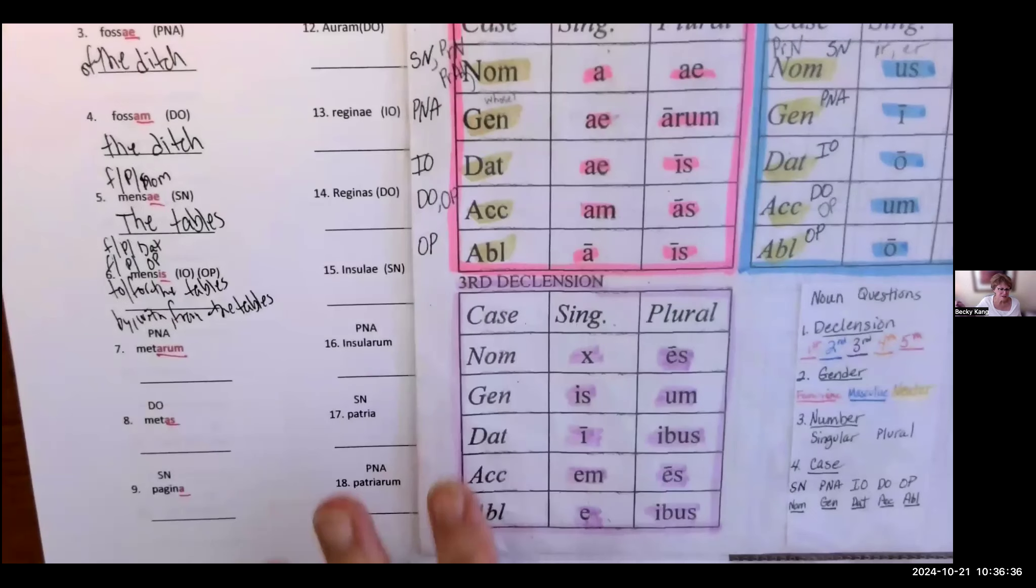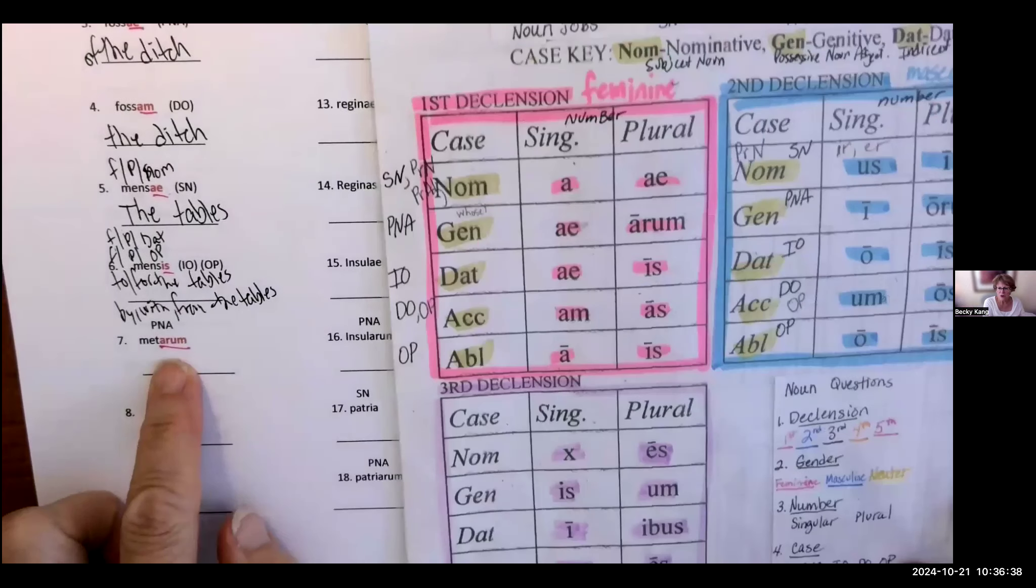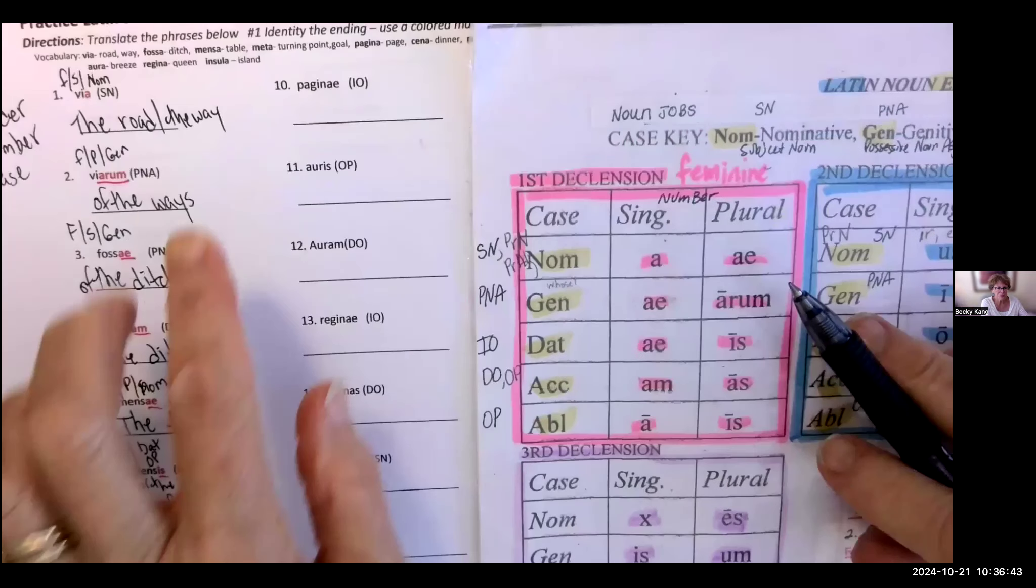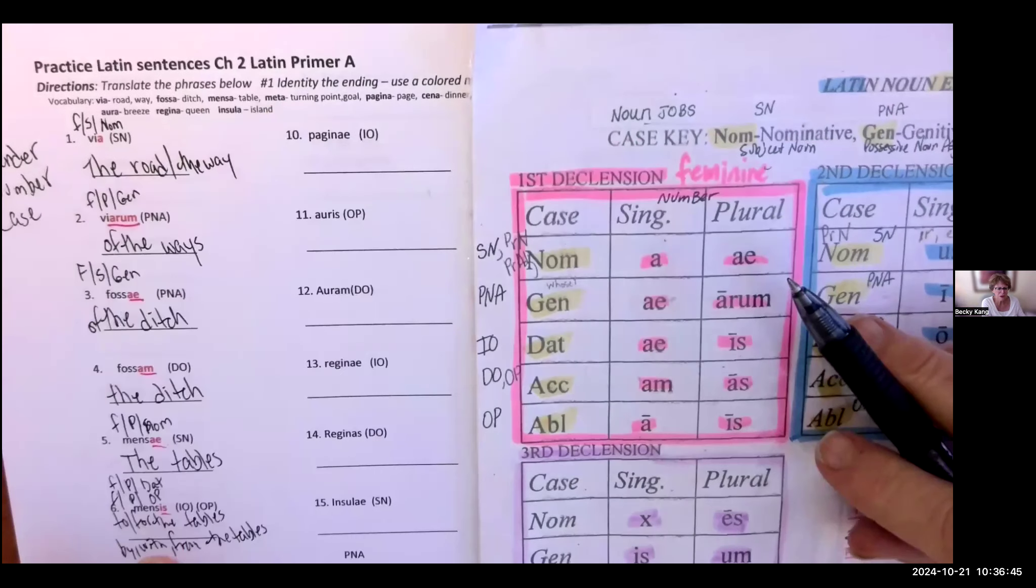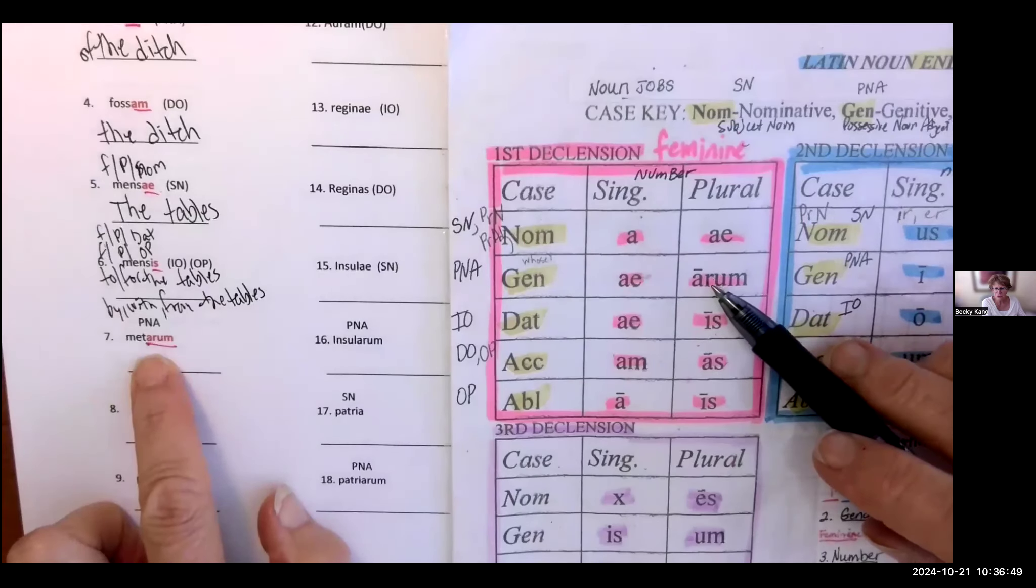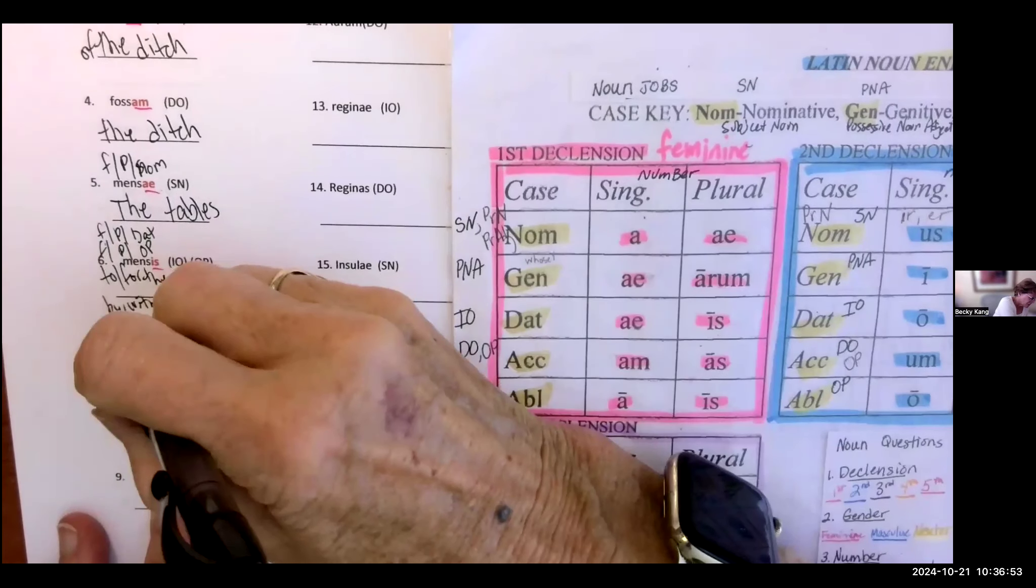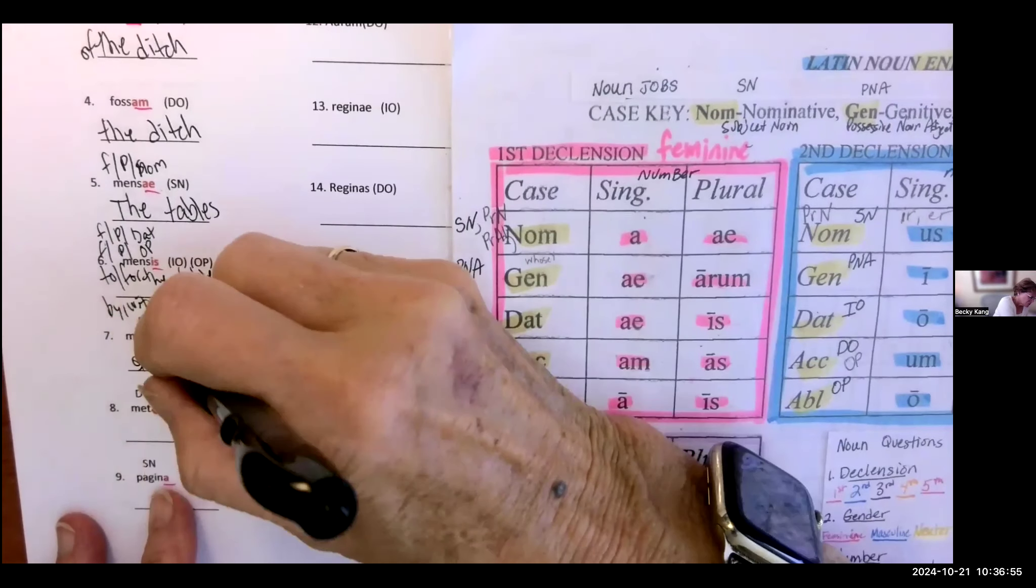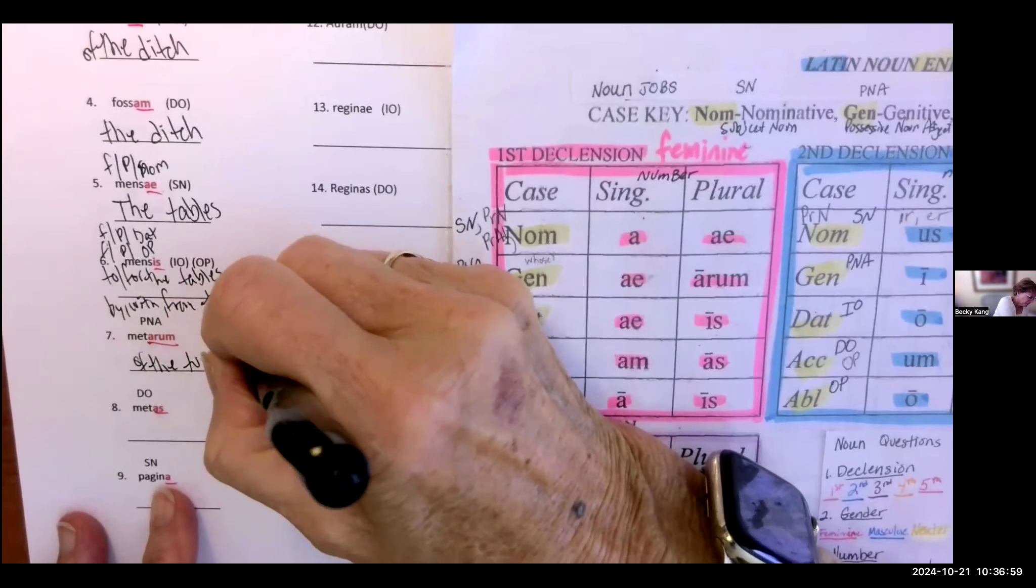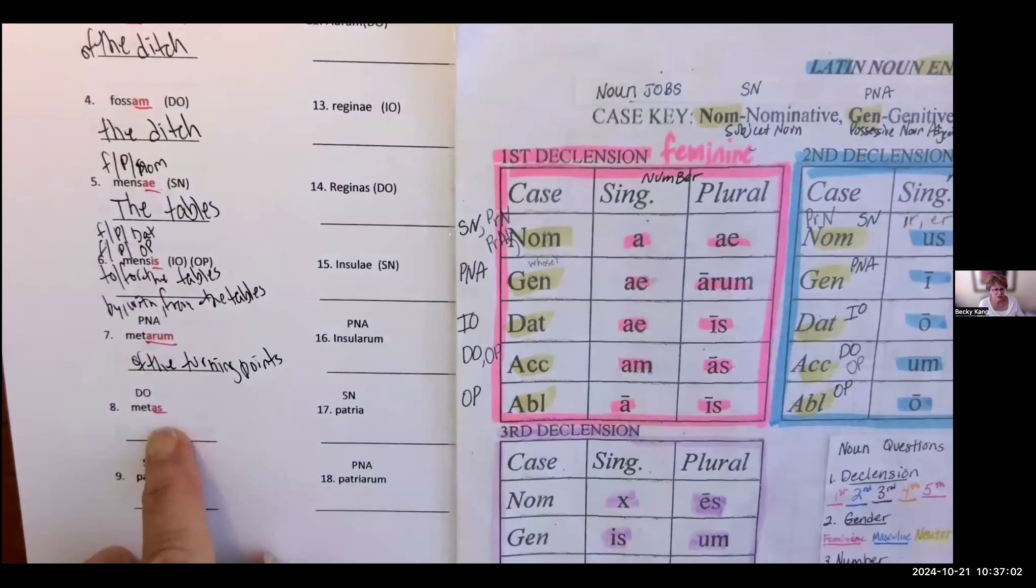Now, these phrases. Arum, arum is right here. Metta, if you remember, was the butterfly, was turning point or goal. Arum has the little English word of, of the turning points. Or, of the goals.